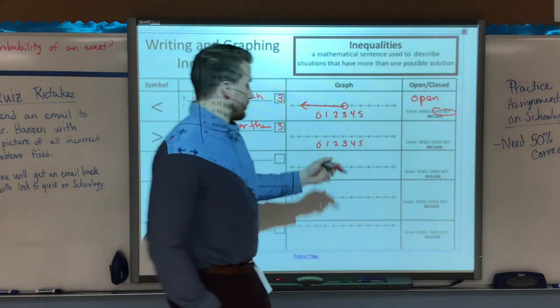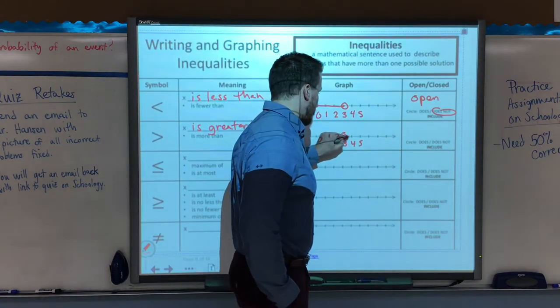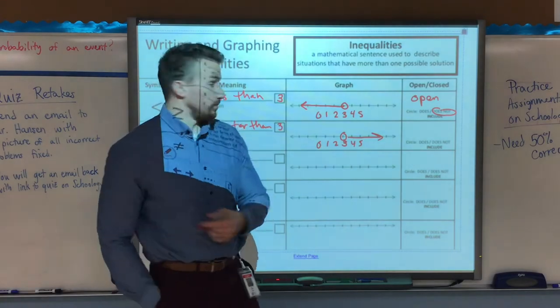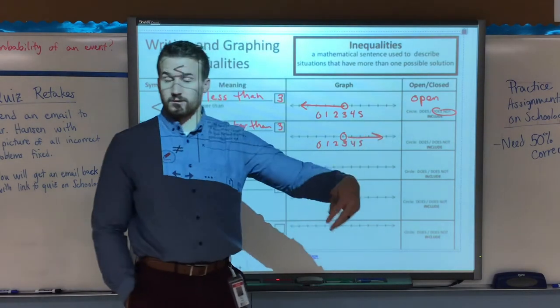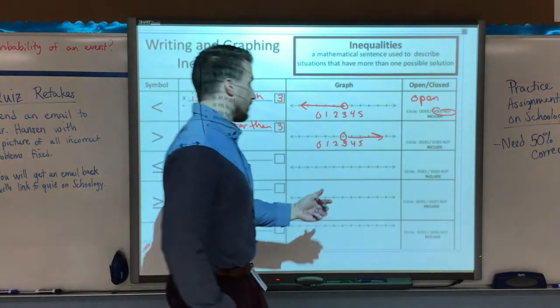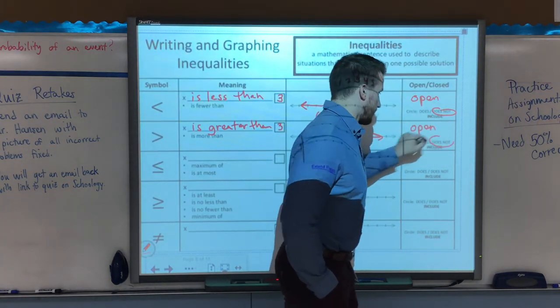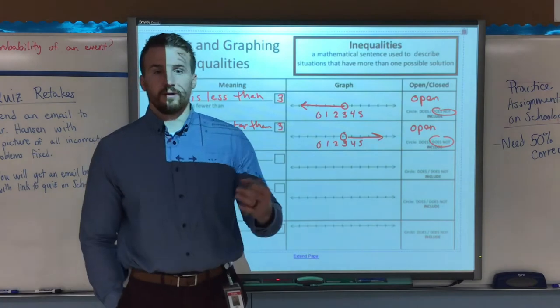Again, it's an open circle because what I'm saying is it can be anything greater than 3, but it can't be 3 or less. So it could be 4, 5, 6, etc. It could be 25, 100, it doesn't matter. So again, it's an open circle, and again, it does not include the value of 3.